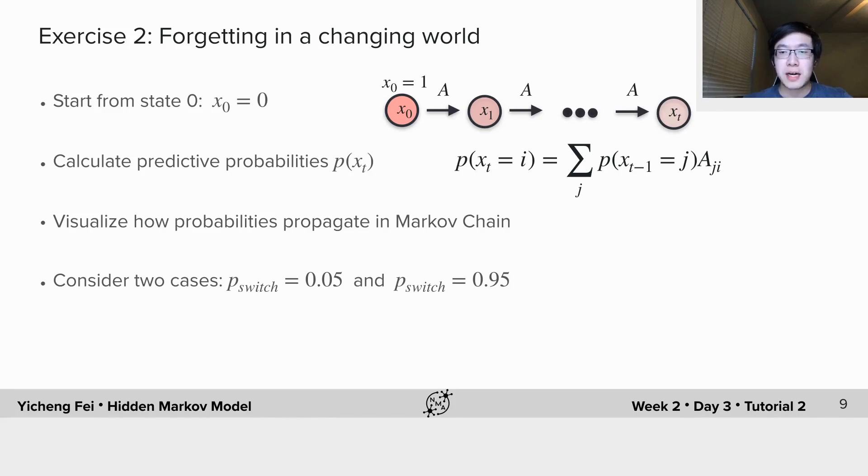Please try different values of switching probabilities ranging from 0 to 1 and try to understand how that affects the curve of predictive probabilities.